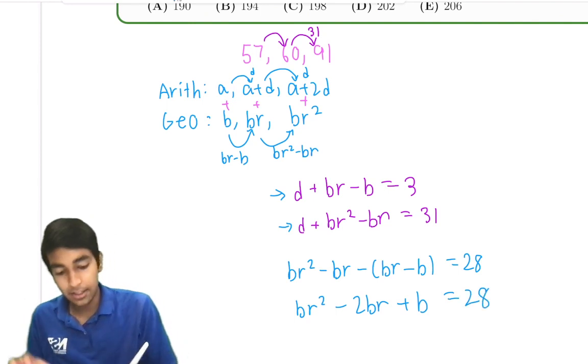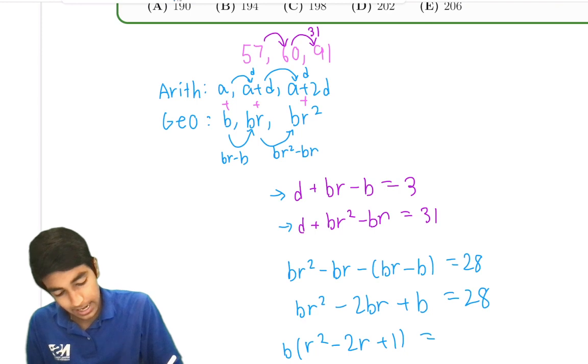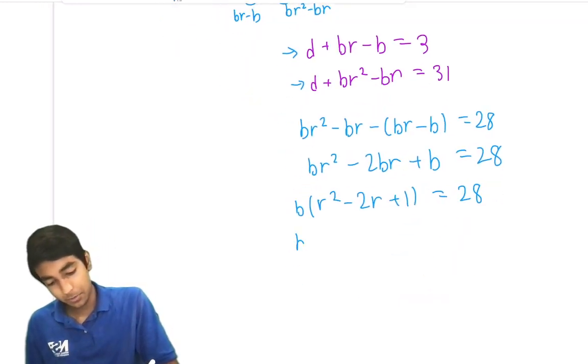All three of these terms have b in them. So b times r squared minus 2r plus 1 is 28. And r squared minus 2r plus 1 is just r minus 1 squared.